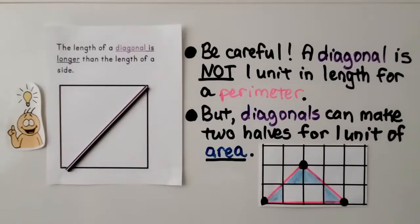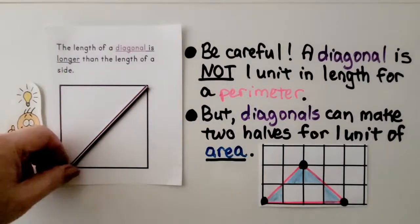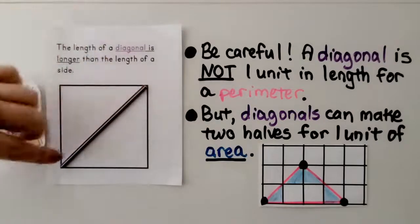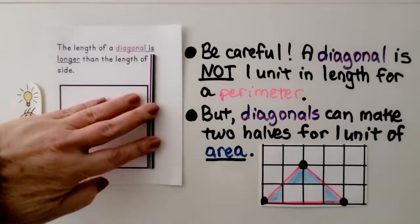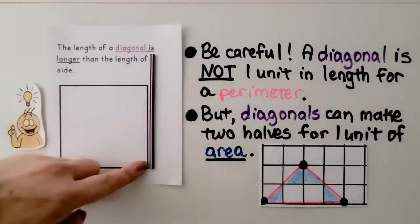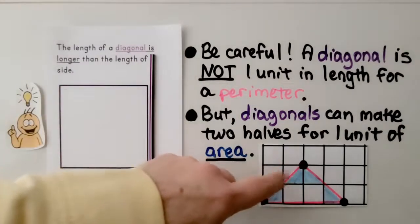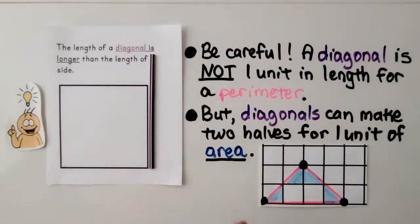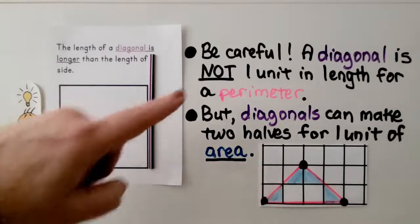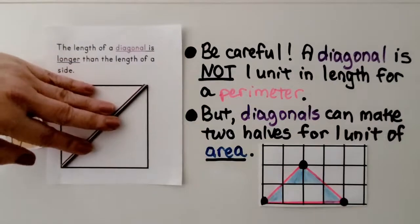Be careful as you're doing perimeters and area. A diagonal is not one unit in length for a perimeter. Here we have the diagonal of a grid square on a coordinate plane. If we take this stick, which is the length of the diagonal, and lay it along the side, we can see the diagonal is much longer than a side, which would be one unit for our perimeter. So this diagonal is not one unit.